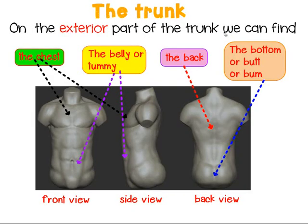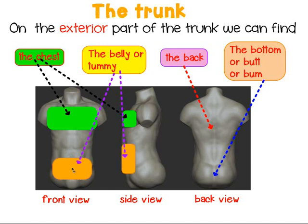On the exterior part of the trunk we can find the chest, here on the upper part of the trunk. This is the front view, this is the side view, and this is the back view — the chest is here. And also the belly or tummy — your belly or your tummy in front view and on the side view. The belly is around your waist, yes, the waist down.